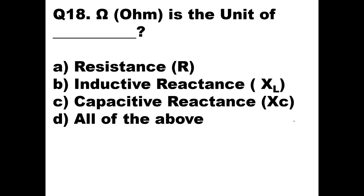Question 18: Ohm is the unit of what? Ohm is the unit of resistance, which is opposition to the flow of current. Ohm is also the unit of inductive reactance XL, and also capacitive reactance XC — all opposition to the flow of current. So all three options A, B, C have ohm as their unit. The answer is Option D — all of the above.